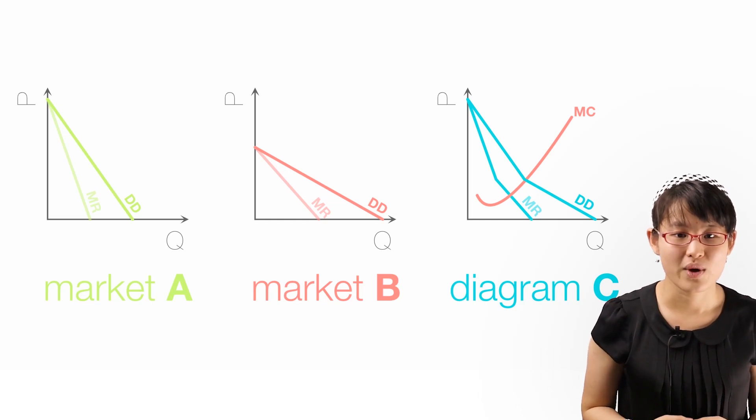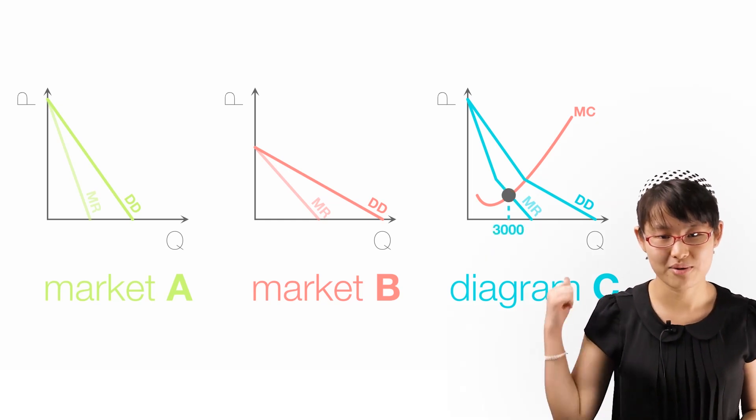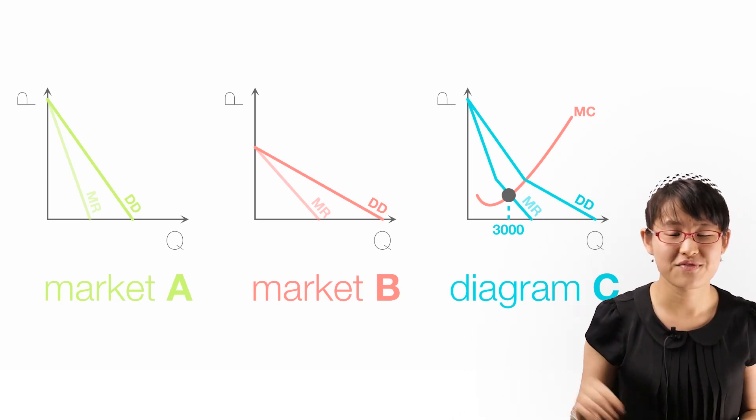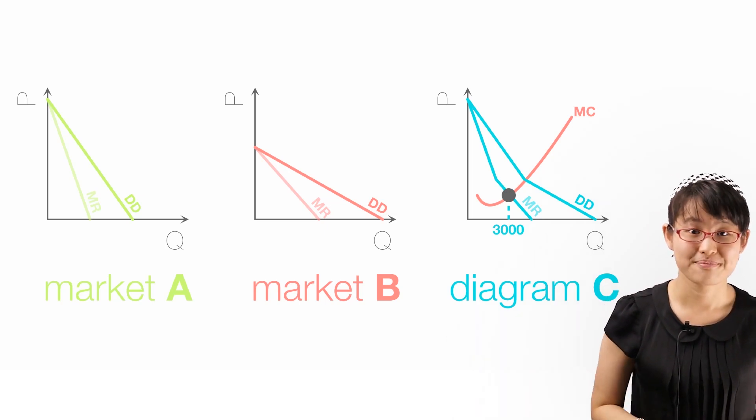Total profit is maximized where MC equals MR in diagram C, at an output of 3,000 units in total. This output must then be divided between the two markets A and B. But how?